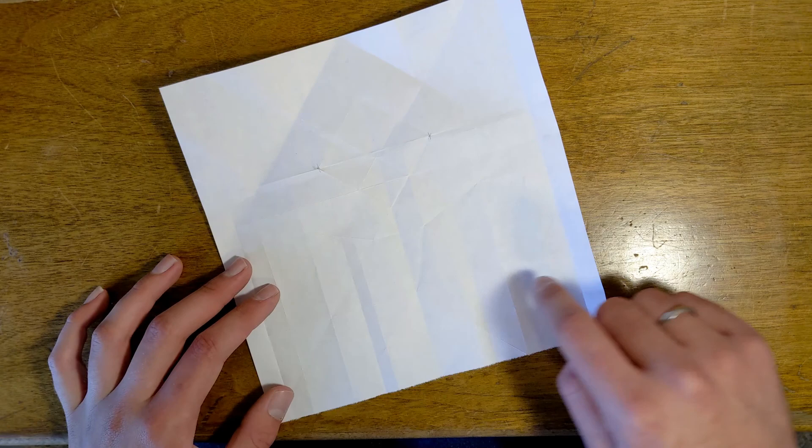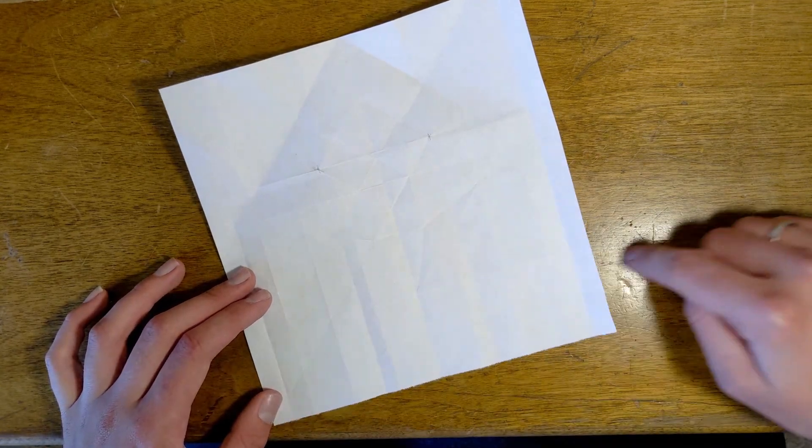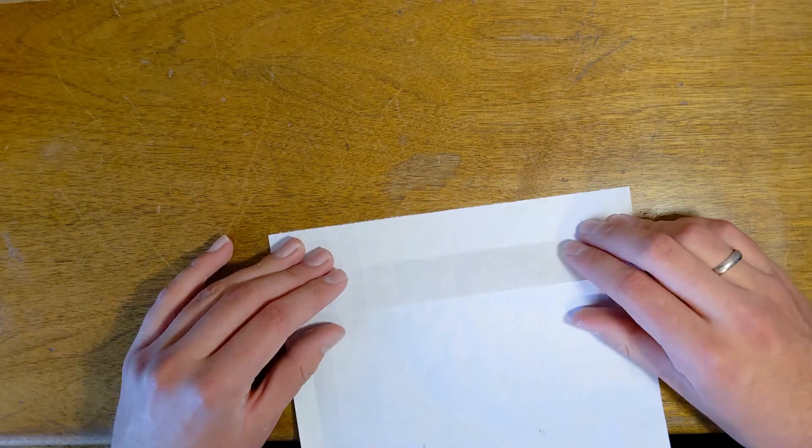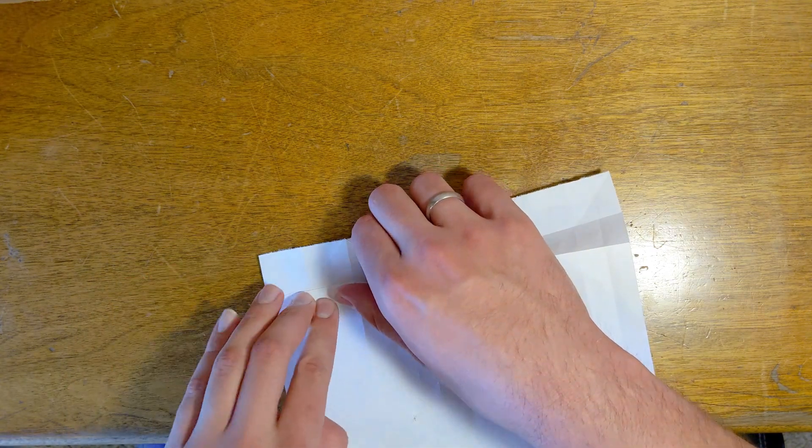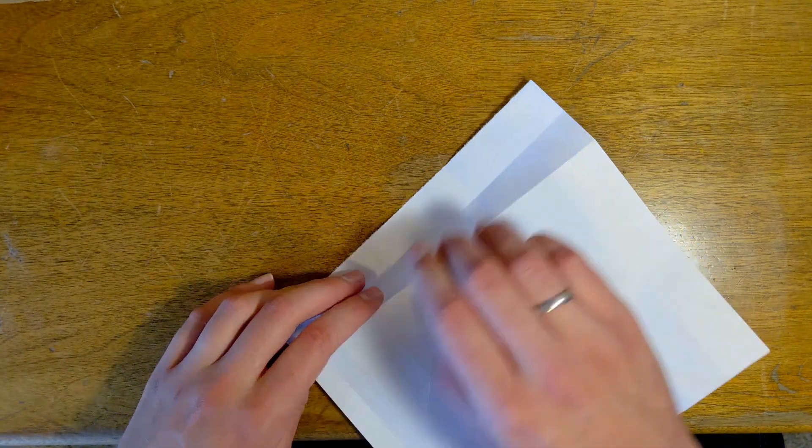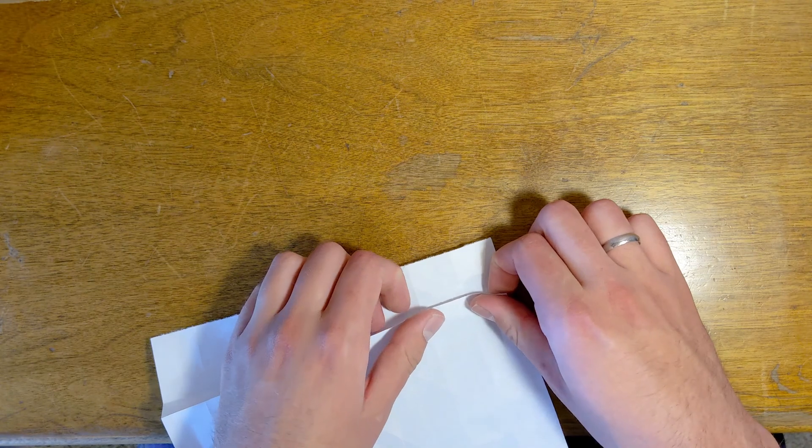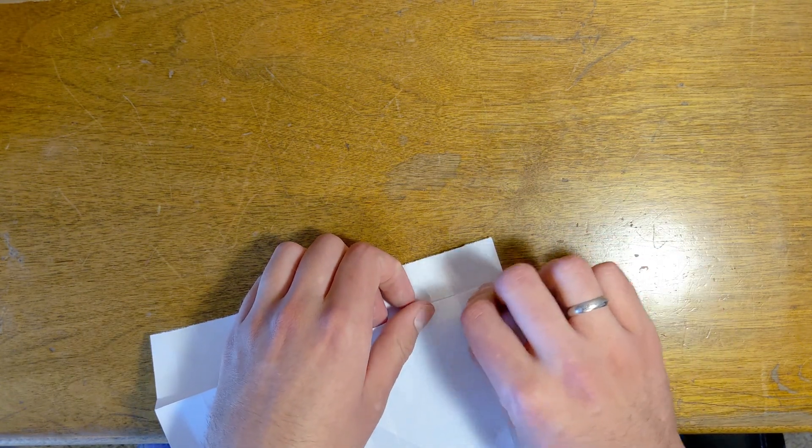And then this next part will help create actual crease flaps for the arms which I haven't done before in the original tutorial. So this will hopefully make the collapsing part in the next part easier.